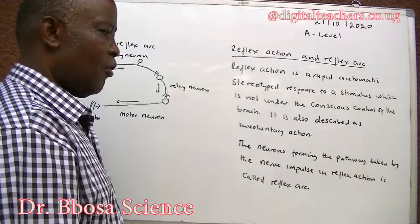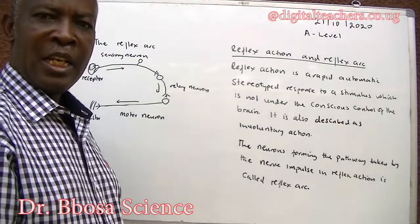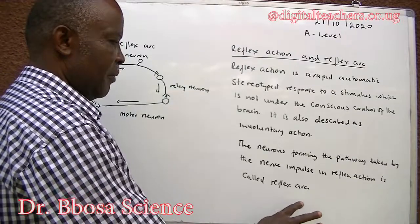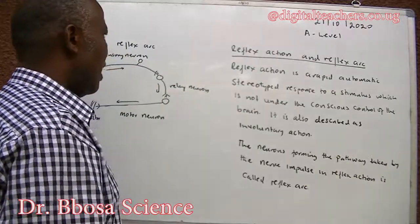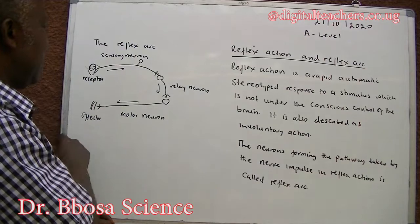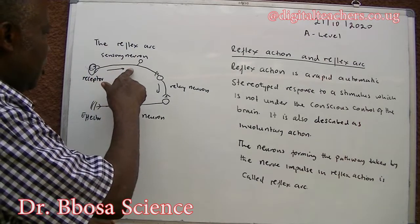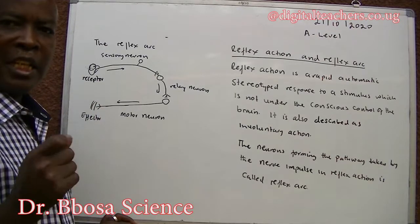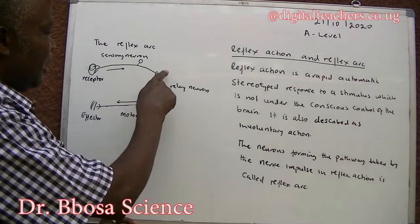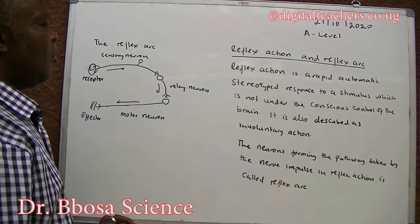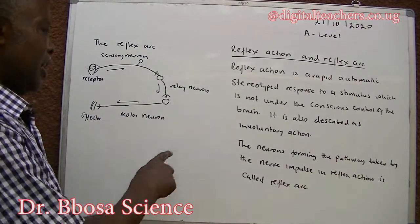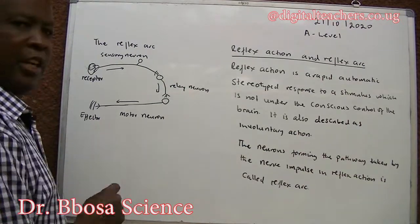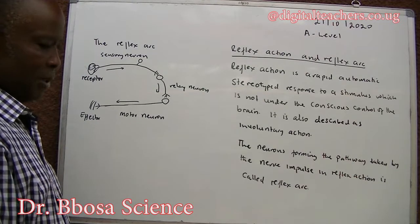The neurons forming the pathway taken by the impulse in a reflex action is called a reflex arc. The reflex arc is made up of the sensory neuron that receives the stimulus and forms the impulse. Then the impulse travels to the spinal cord where it meets the relay neuron. From the relay neuron, the impulse is transported to the effector where the response takes place.